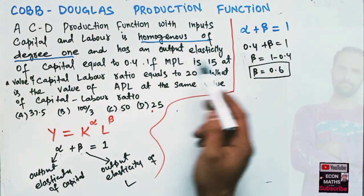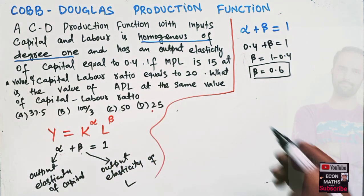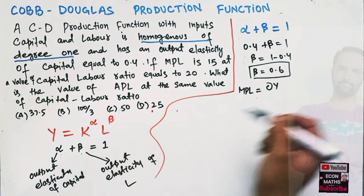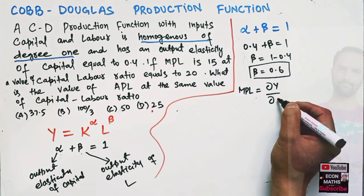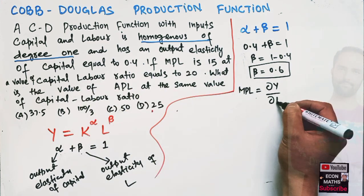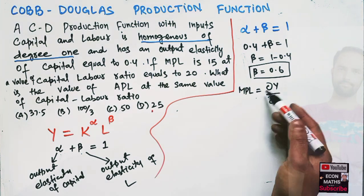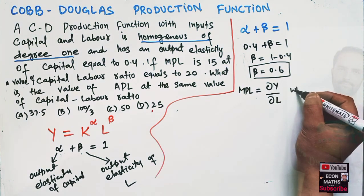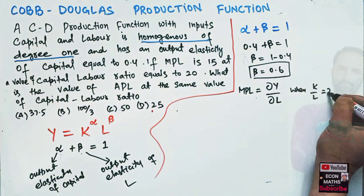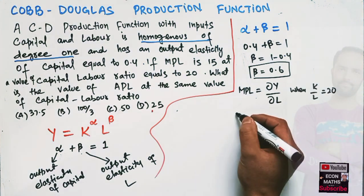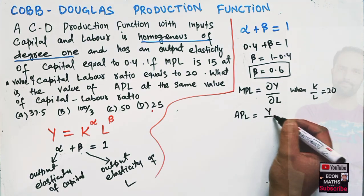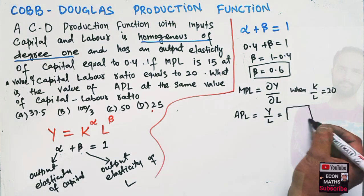The marginal product of labor is 15 at a capital-labor ratio of 20. Marginal product of labor is the partial derivative of output with respect to labor. The average product of labor is simply Y over L. We need to find the value of APL at the given capital-labor ratio.